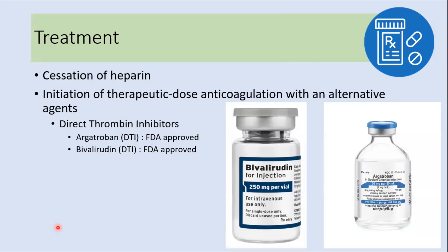Treatment involves cessation of all heparin products, and patients should be started on therapeutic-dose anticoagulation with alternative agents. Anticoagulation must be initiated even if the platelet count is low, because the risk of thrombosis from the hypercoagulable state outweighs the risk of bleeding from thrombocytopenia. Direct thrombin inhibitors are the preferred agents; argatroban and bivalirudin are FDA approved, with argatroban being the usually preferred agent.